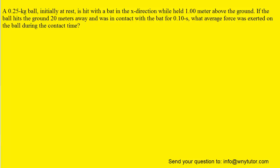What we'll do first is draw a picture of this baseball being hit. Here we have the ball, and because the question notes that it is initially at rest, we can say that the initial velocity of the ball is equal to 0 meters per second. Then a bat comes in and hits the ball, giving it some final velocity that we don't know yet.